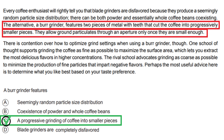Option D: Blade grinders are completely disfavored. This option is not supported by the paragraph. The paragraph mentions that blade grinders are disfavored by coffee enthusiasts, but it does not state that they are completely disfavored or that this applies to burr grinders. In summary, option C is correct because it aligns with the statement that a burr grinder features a progressive grinding of coffee into smaller pieces. The other options are incorrect because they either refer to the disfavored blade grinders or include unsupported information.